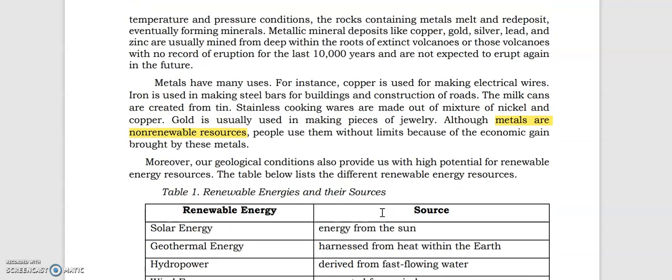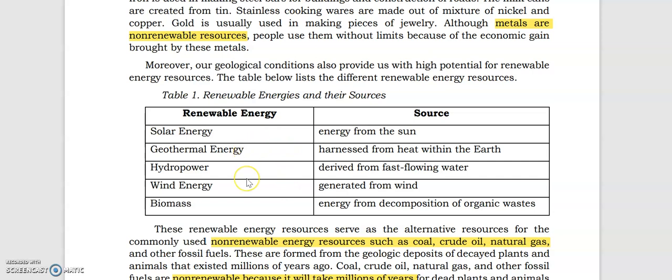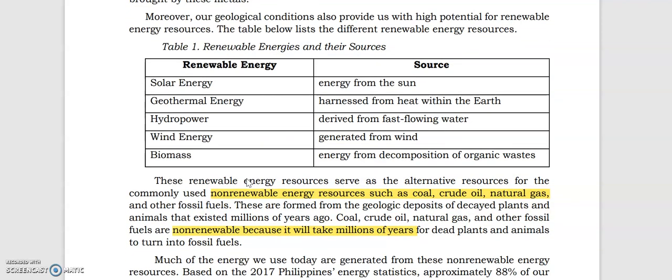So besides that our country is located in the Pacific Ring of Fire, which gives us a lot of many different metallic mineral deposits, we are also located where these geological conditions can provide us with high potential for renewable energy resources such as solar energy, geothermal energy, hydropower, wind energy and biomass. So these renewable energy resources can replace this non-renewable energy resources such as coal, crude oil, natural gas and other fossil fuels, which takes millions of years for dead plants and animals to turn into fossil fuels.